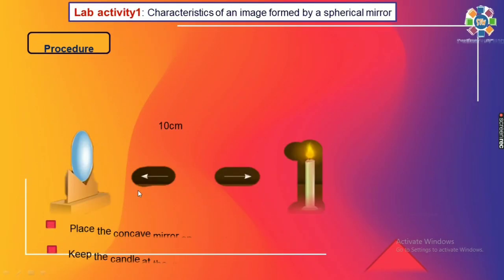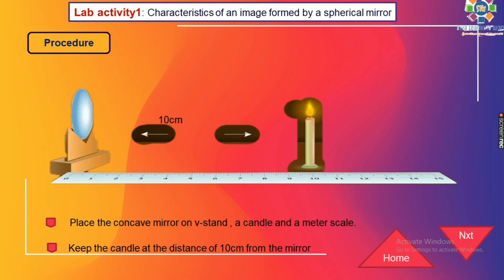Coming to the procedure. In step 1, place the concave mirror on a V-stand, a candle, and a meter scale for this experiment. In the next step, keep the candle at a distance of 10 cm from the mirror — meaning the distance from the mirror to the candle is 10 cm.